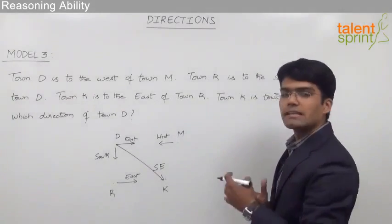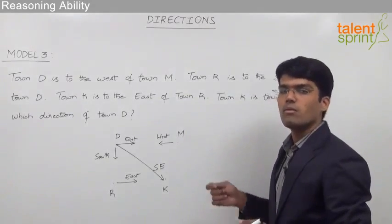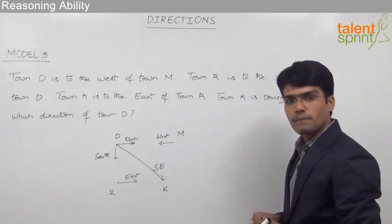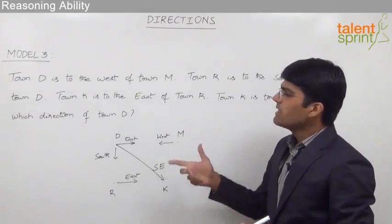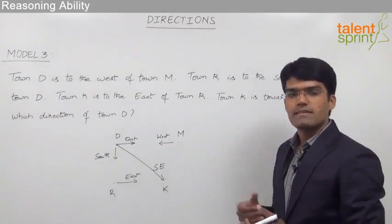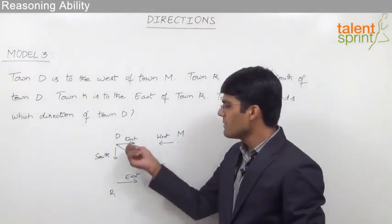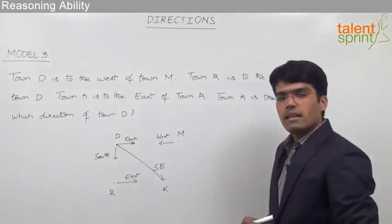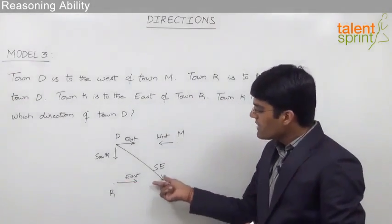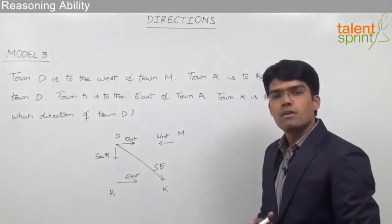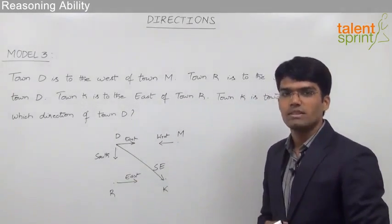This is how we can simply mark the given positions of the towns and find out the direction of one town with respect to the other. One point to make clear: the distance between two towns is not given in the question, and hence we are simply taking them at certain distances. Irrespective of the distances between the two towns, town K will always be towards the south-east of town D.